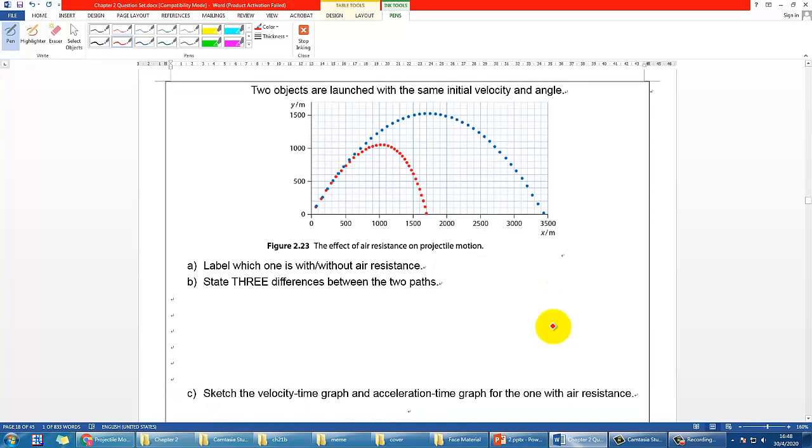From here let me give you an example. I have got a graph combined of two motions here which apparently is from the textbook also. I want you to identify which one is the one that is with air resistance, the other one of course with the absence of air resistance.